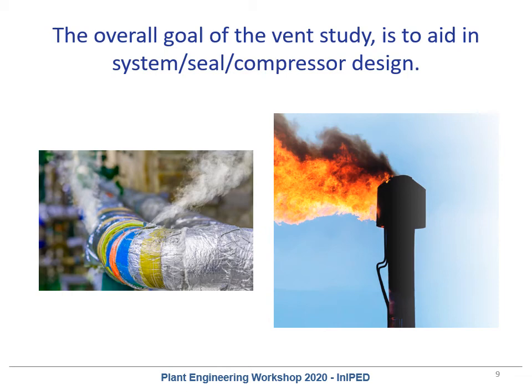Generally, the goal in compressor seal and system design is to try and reduce the pressures experienced during a failure as much as possible, which means enabling the gas to escape the compressor as readily as possible and directing all of the gas that escapes to a safe area. This means trying to put as much of the flow rate up your primary vent as possible compared to your secondary vent, and also trying to prevent any escape of gas out the bearing area of the compressor, which could lead to process gas existing directly at the compressor case — which is very bad.